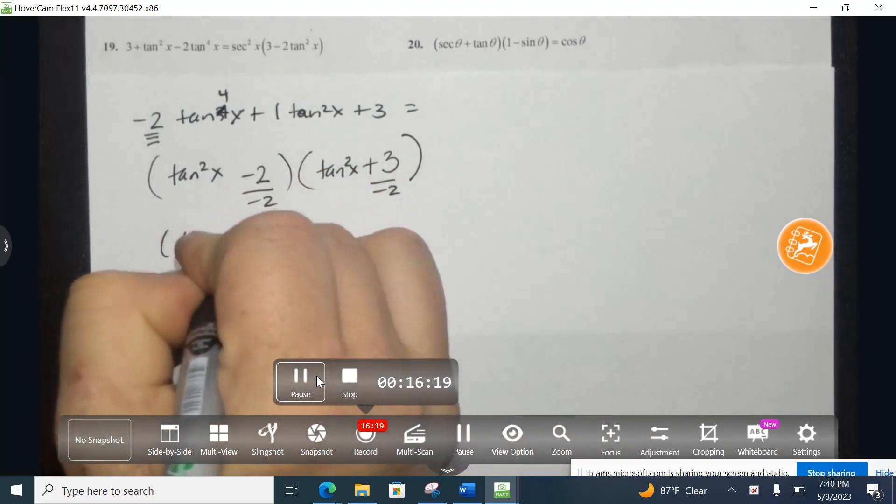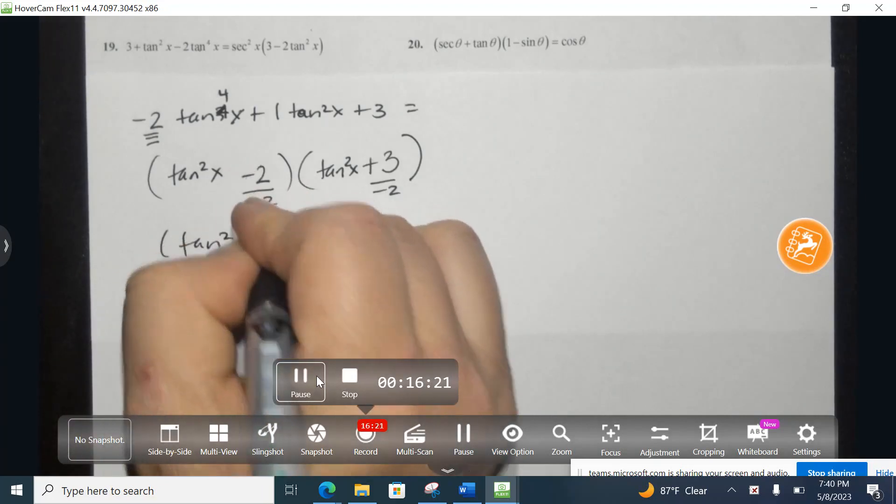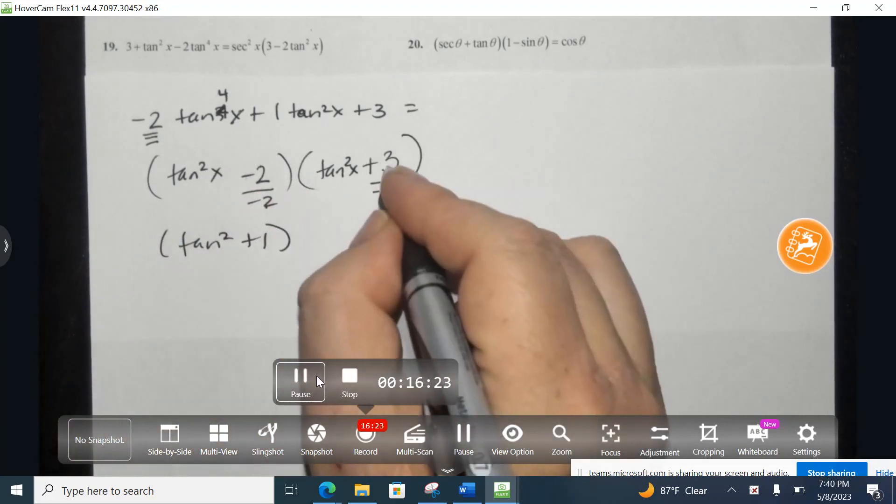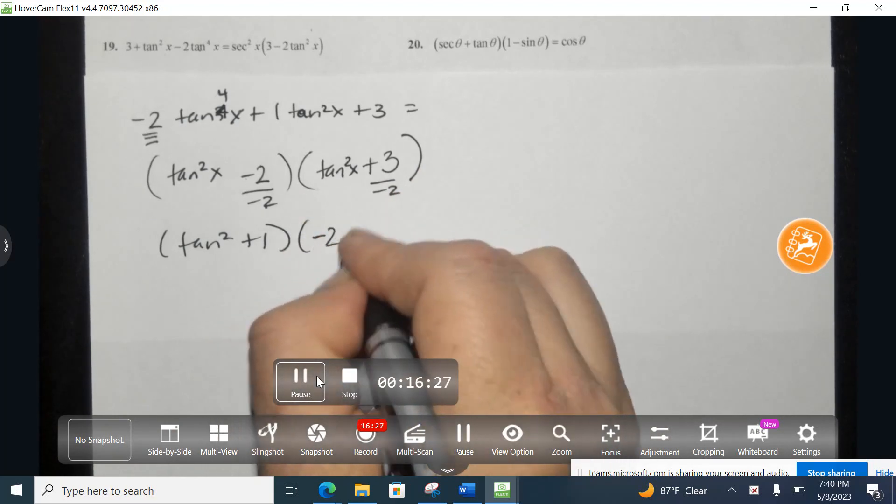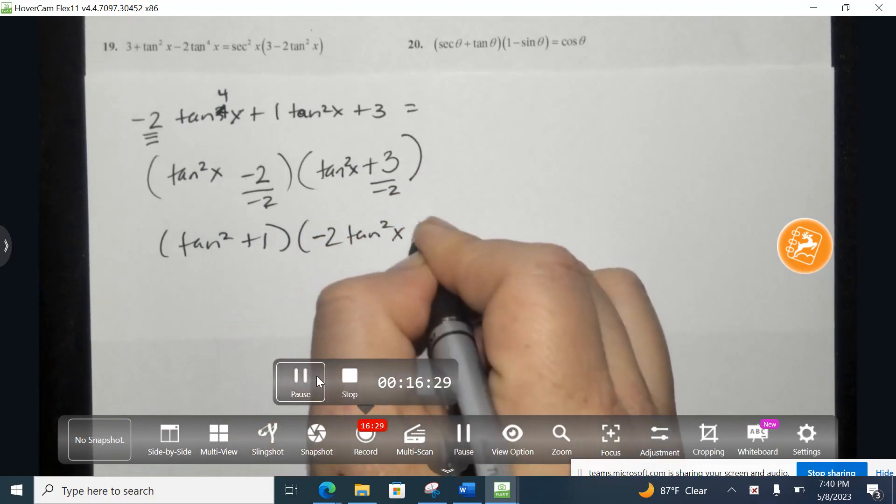So I have tangent squared, negative 2 divided by negative 2 is positive 1, and then this can't be reduced, so the negative 2 pushes up. So I have negative 2 tangent squared x plus 3.